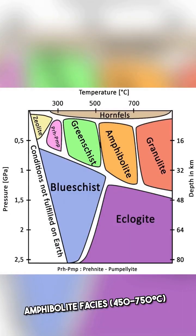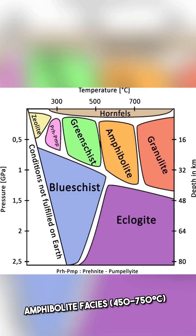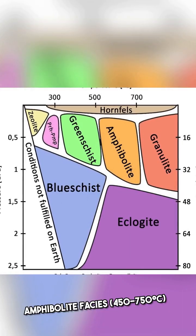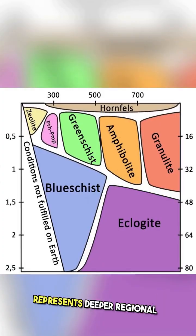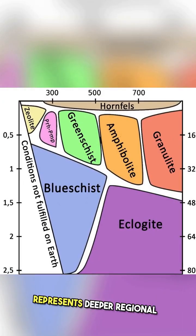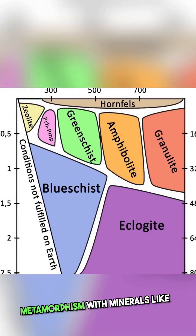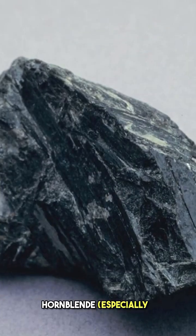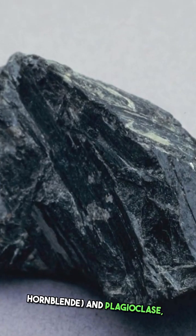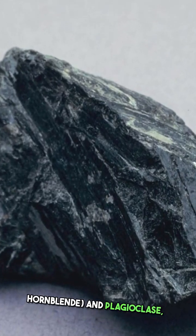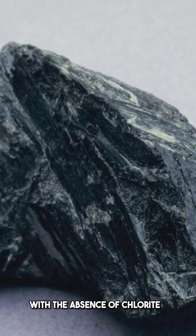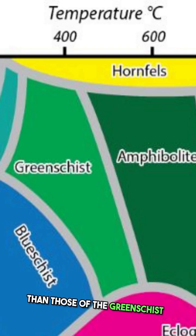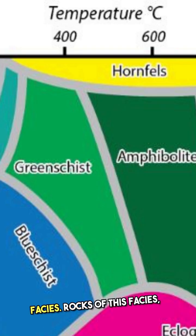Amphibolite facies, 450 to 750 degrees Celsius, represents deeper regional metamorphism with minerals like hornblende and plagioclase, with the absence of chlorite indicating higher temperatures than those of the greenschist facies.